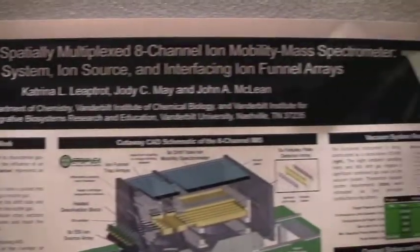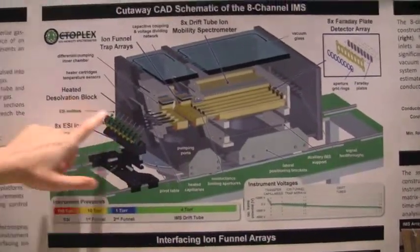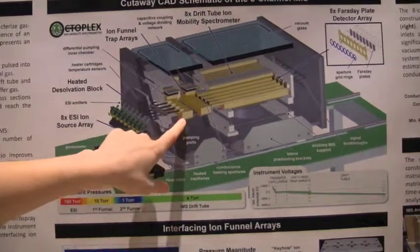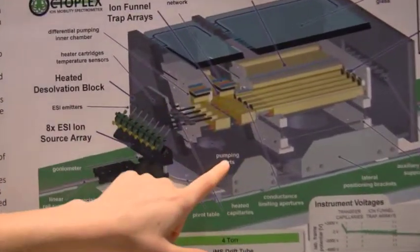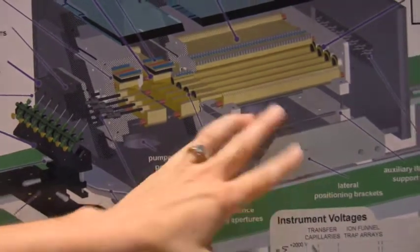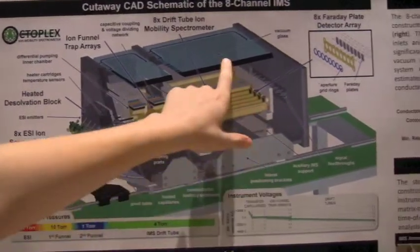My name's Katrina, and I'm working on the development of a spatially multiplexed ion mobility mass spectrometer. So far in my work, I've developed this electrospray ion source, an eighth array. Then there's a heated desolvation block with capillaries to go from atmospheric pressure down to 15 torr in this first ion funnel. The first ion funnel is isolated from a second one, pressure-wise. The second ion funnel is at 1 torr. Then we go through an aperture array into the ion mobility drift tubes. This will be at about 4 torr, pressurized with helium. The detector array is 8 Faraday plates. After this stage is complete, we'll be interfacing to a commercial Q-TOF, so we'll have a full 8-channel ion mobility mass spectrometer.